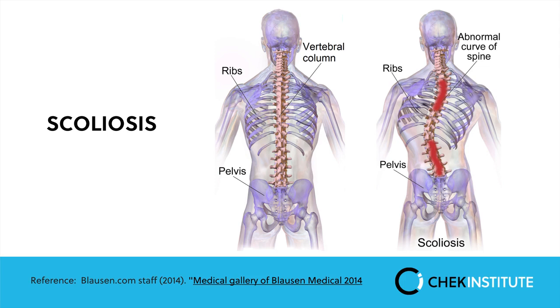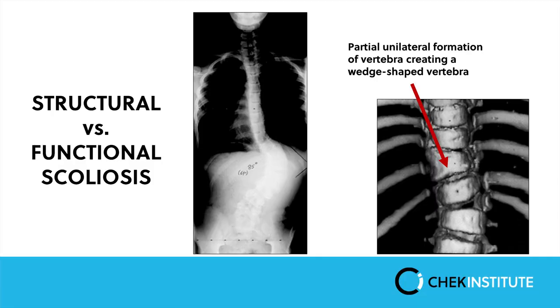Studies have shown that scoliosis occurs in around 10 to 15 percent of the population. You can also have a structural scoliosis and a functional scoliosis. Simply put, a structural scoliosis is pretty much fixed, whereas a functional scoliosis can be corrected. In the picture, where the arrow is pointing, you can see that on one side the vertebral body has grown larger, causing the curvature in the spine.